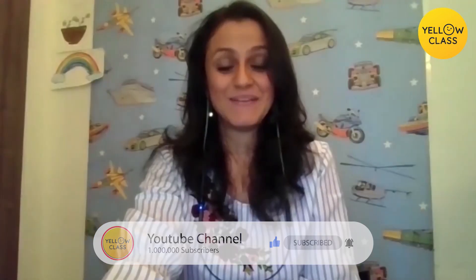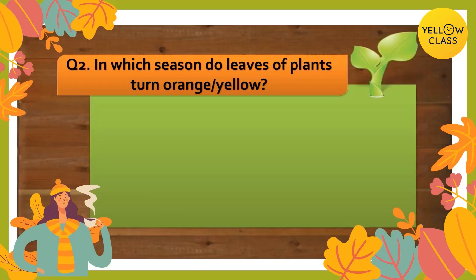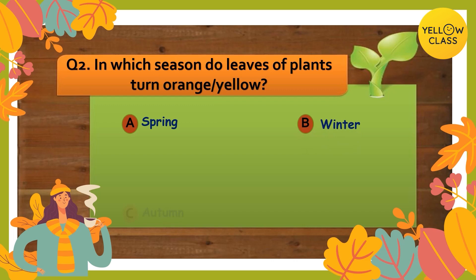Awesome! Let's move on to question number two. Get ready — question number two: in which season do leaves of plants turn orange or yellow? Your options are: option A spring, option B winter, option C autumn, and option D summer. Your time starts now!